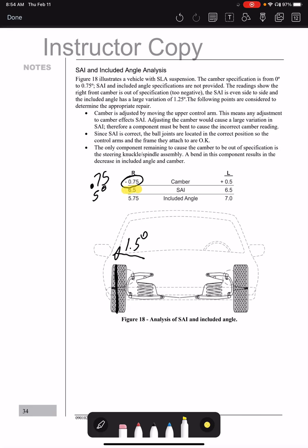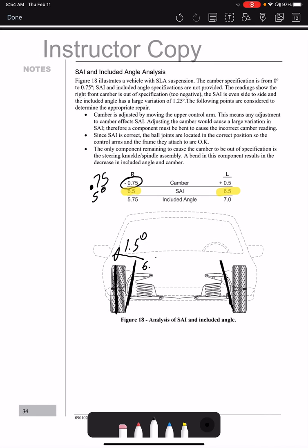So essentially, you should look at this right off the bat and think, okay well, if my SAI is the same on both sides, that means my position of the ball joints are both at 6.5 degrees. So that should tell you right off the bat that the ball joints are positioned correctly.